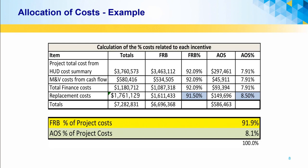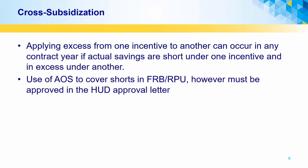The costs and savings associated with each incentive are separated and added together. In the example, the FRB portion is 91.9% of costs and the add-on subsidy portion is 8.1% of costs. RPU is not used in this example. Applying excess from one incentive to another can occur in any contract year if actual savings are short under one incentive and in excess under another. Cross-subsidization of incentives is applicable when approved with the HUD review, and this applies to projects after 2013. Older projects that have been restructured after 2013 may also be eligible for cross-subsidization.